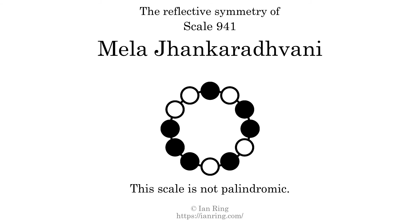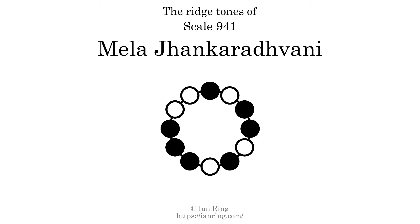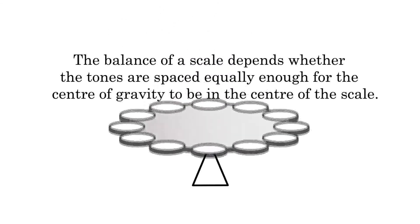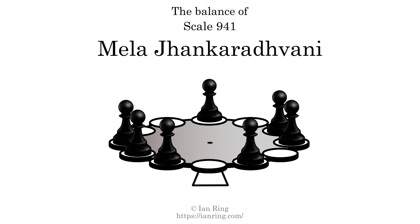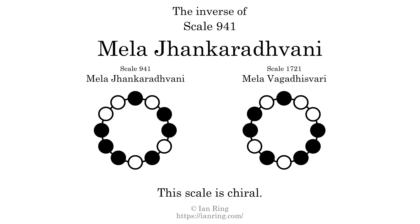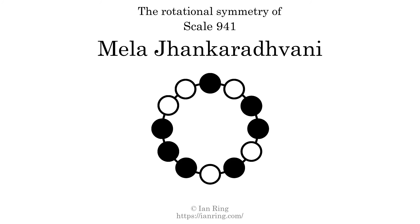This scale has no reflective symmetry. This scale has a different pattern of intervals ascending and descending, so it is not palindromic. This scale has no ridge tones. The balance of a scale depends whether the tones are spaced equally enough for the center of gravity to be in the center of the scale. This scale is not balanced. The inverse of this scale is a mirror image — it is what you get when the sequence of intervals is reversed. The inverse of this scale is scale 1721, also known as Milavagad Hisvary. This scale is chiral; it cannot transform into its inverse by rotational transformation. This scale has no rotational symmetry.